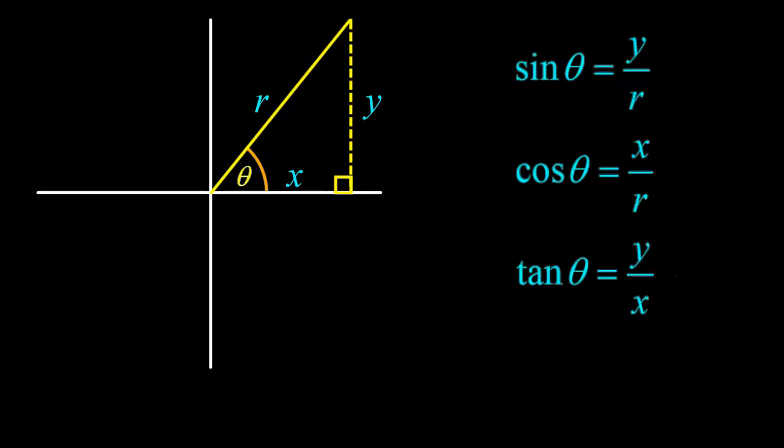Now, if we're going to switch up hypotenuse, opposite, and adjacent for r, y, and x, then our definitions of the primary trig ratios will be different as well. Our new opposite over hypotenuse will now be y over r. Cosine is x over r. Our new opposite over adjacent for tan will now be y over x.